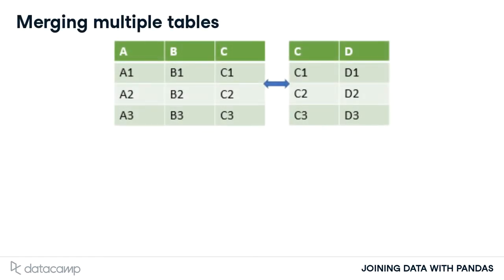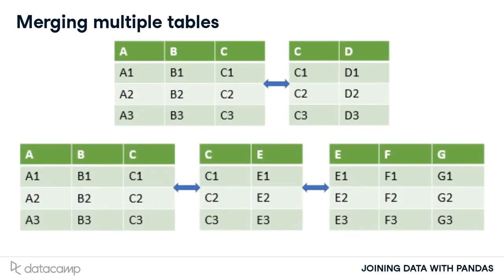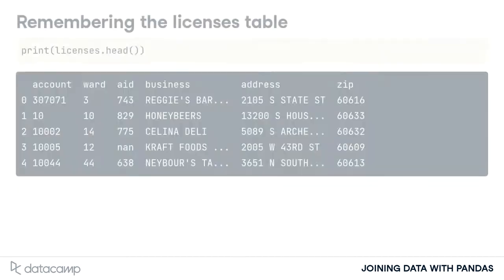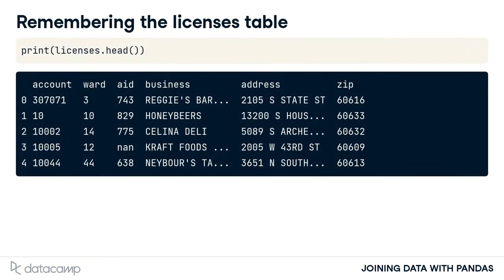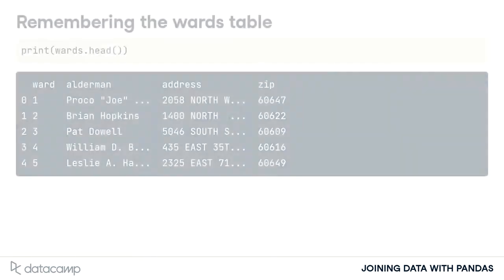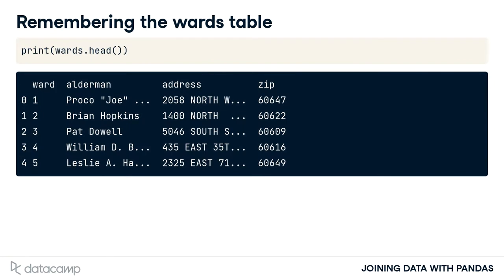Sometimes we need to merge together more than just two tables to complete our analysis. In the previous lesson, we used two tables from the City of Chicago. One table contained business licenses issued by the city. The other table listed info about the local neighborhoods called wards, including the local government official's office.